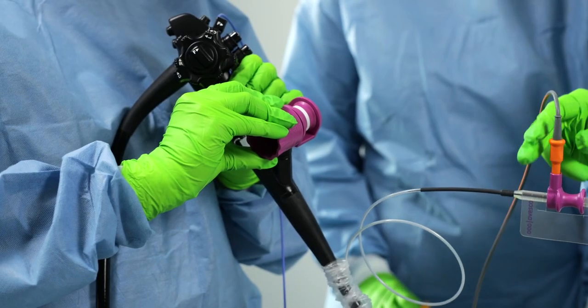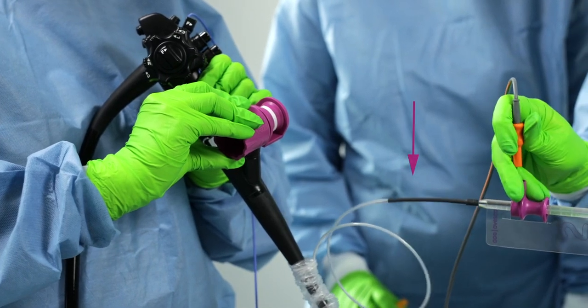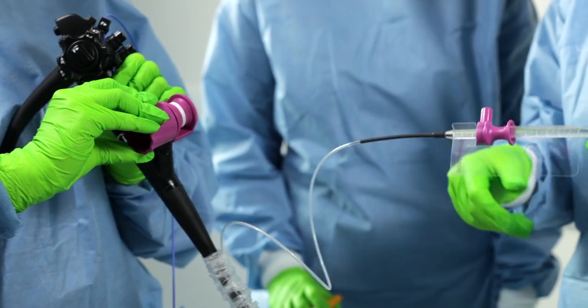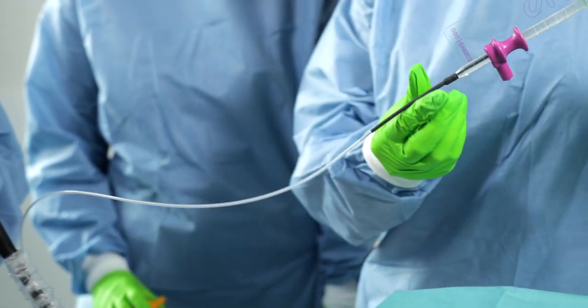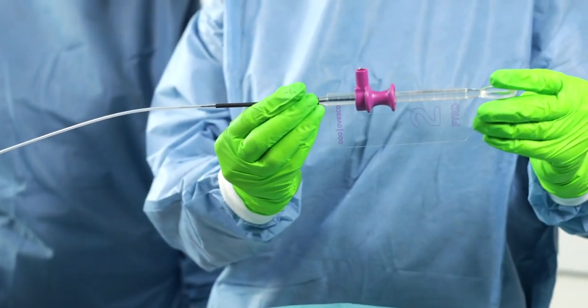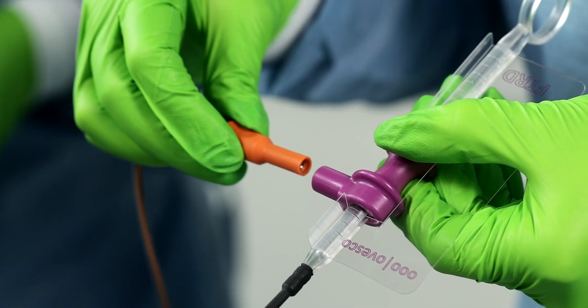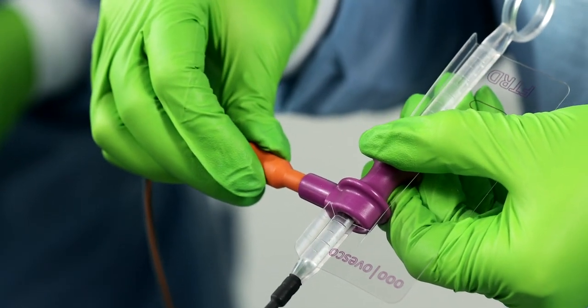The part of the snare shaft that is not inserted, especially the black-bordered area above the handle, must be as straight as possible and not kinked or coiled. Otherwise, this can make snare closure difficult or even impossible.